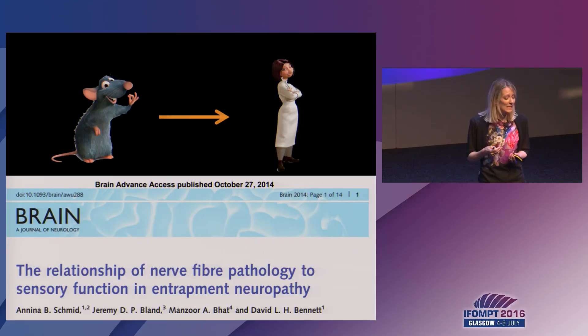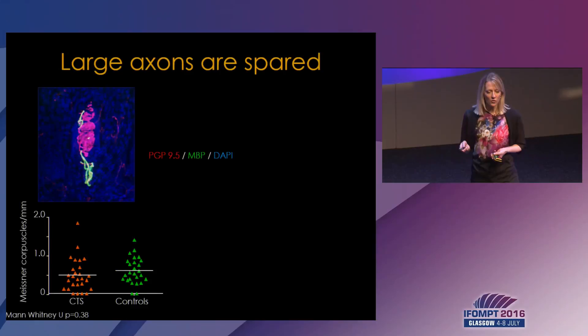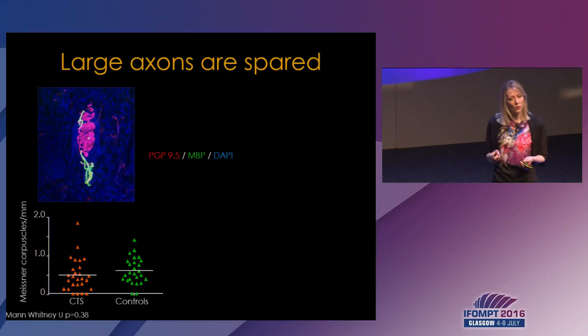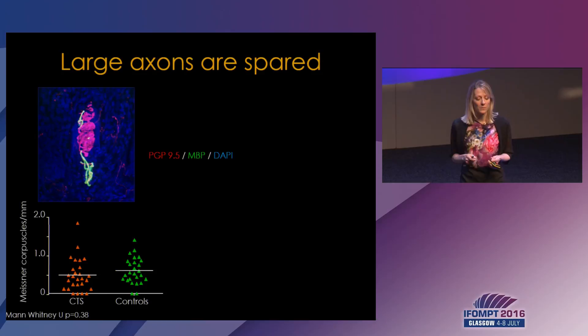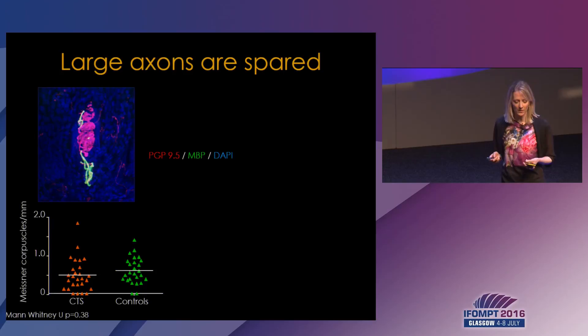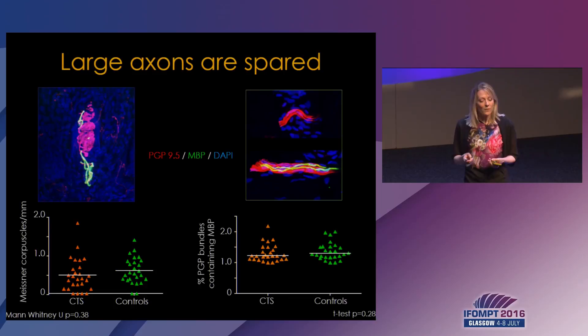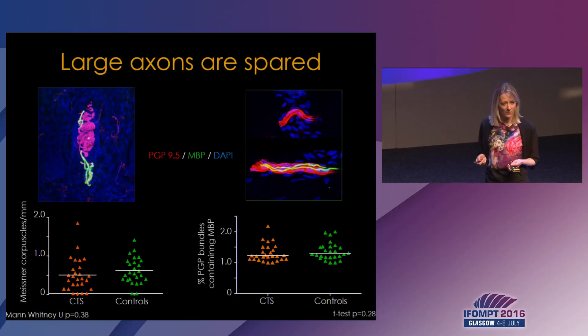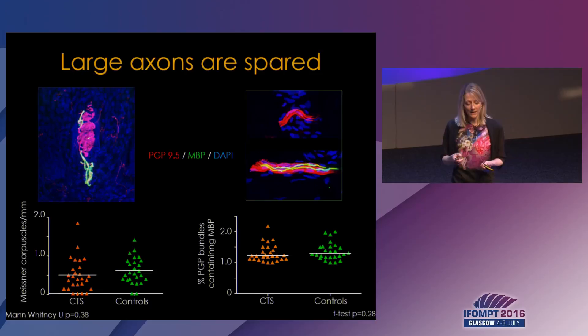A substantial proportion of our sensory fibers start and end in the skin, so a skin biopsy is a great window into the nervous system. When we first looked at the large axons, I quantified the number of Meissner corpuscles — the receptors of the large myelinated A-beta fibers, the touch receptors. We did not find a significant loss of these large fiber receptors. Similarly, when we quantified the number of myelinated dermal fibers, we could not find a significant loss of the myelinated fiber population in patients with carpal tunnel syndrome, further suggesting that large axons remain spared.